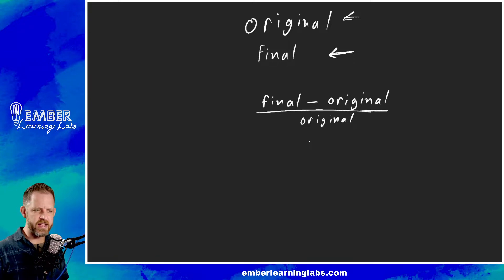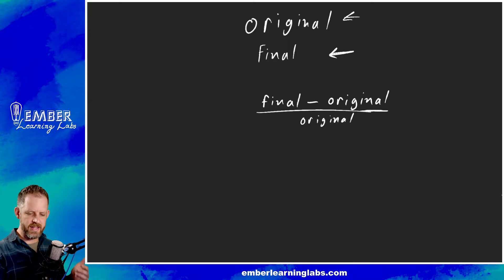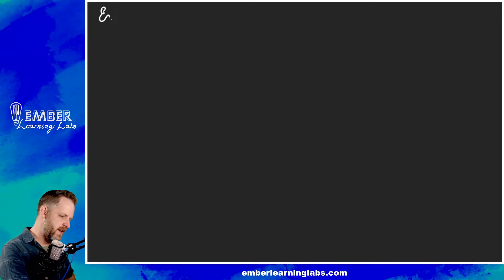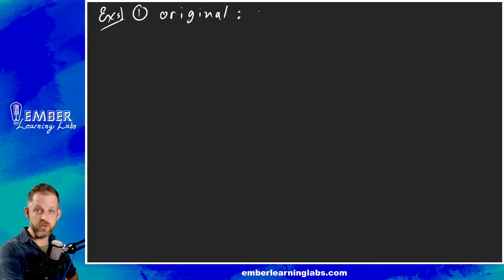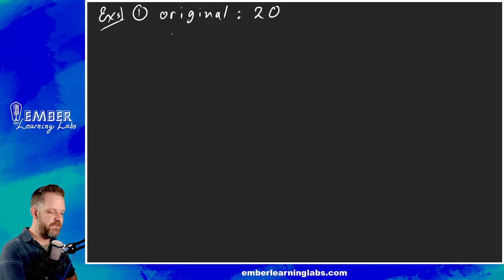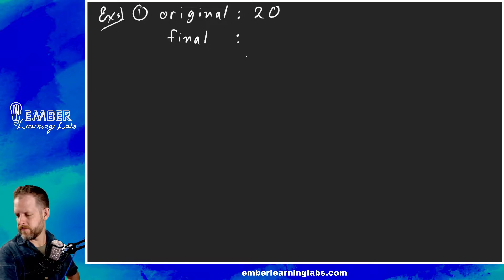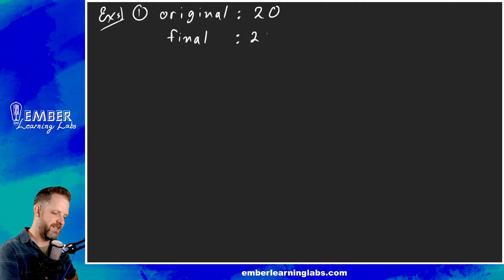That will give us the percent that the thing has changed. Let's put some numbers on this and then do some word problems to cement it. Example one: the original is 20 — this could be dollars, peanuts, fish, doesn't matter, we're just getting the steps down — and the final amount is 23.